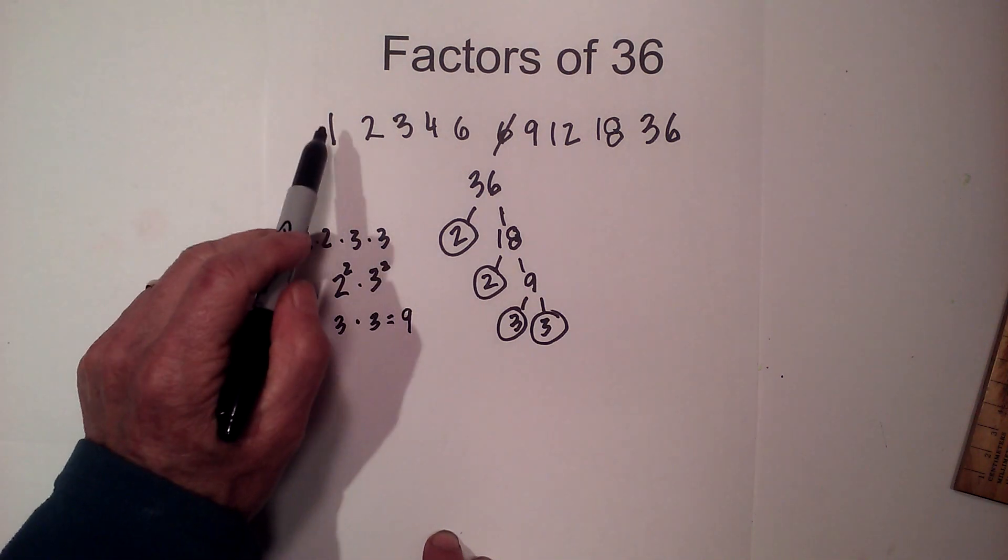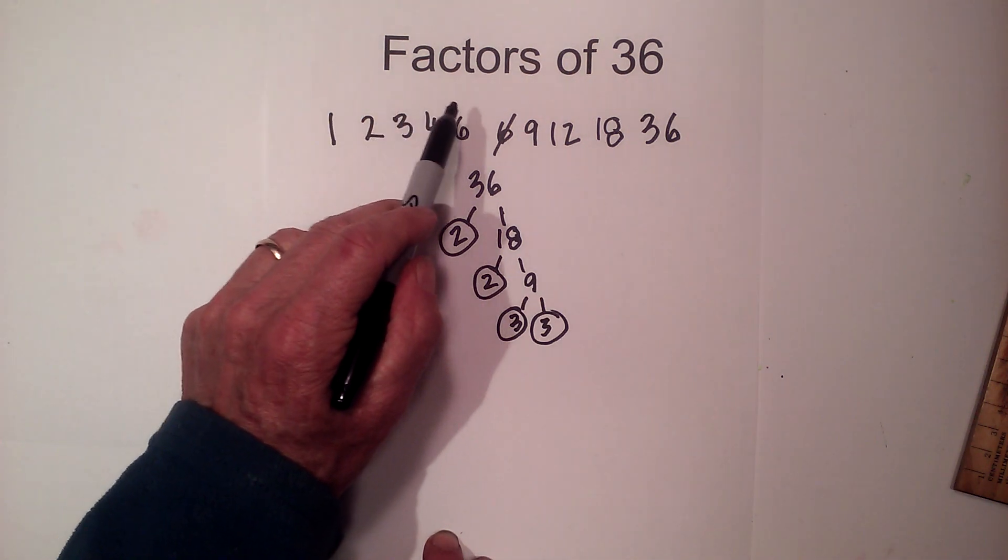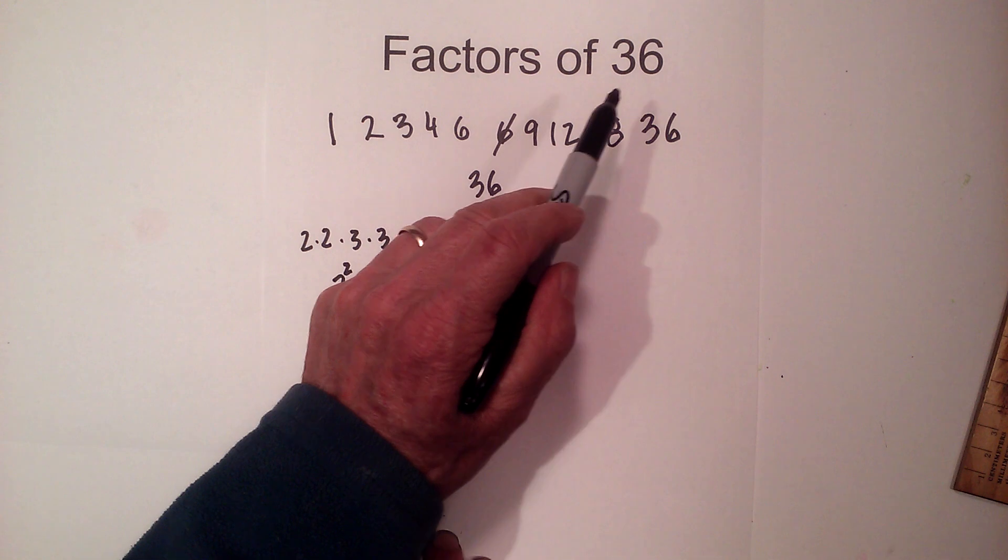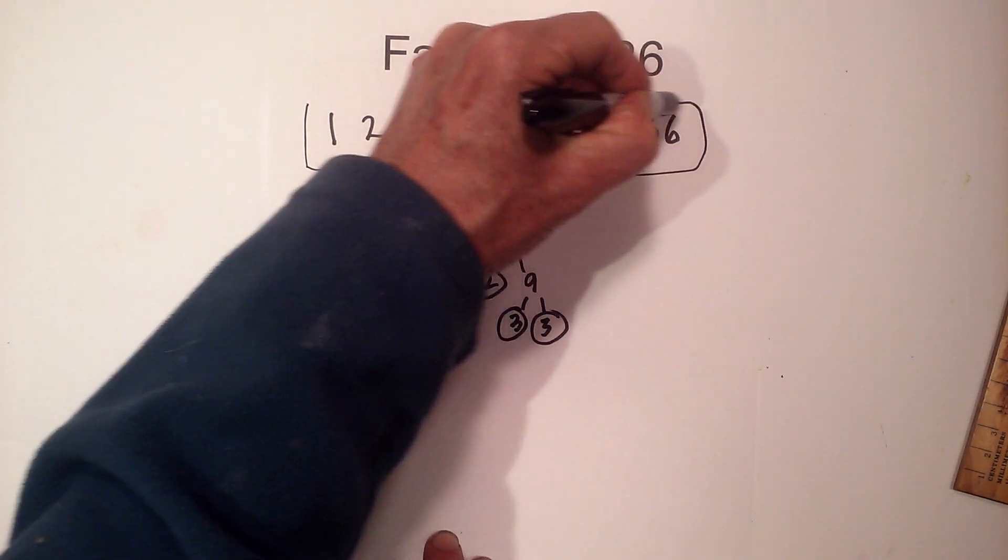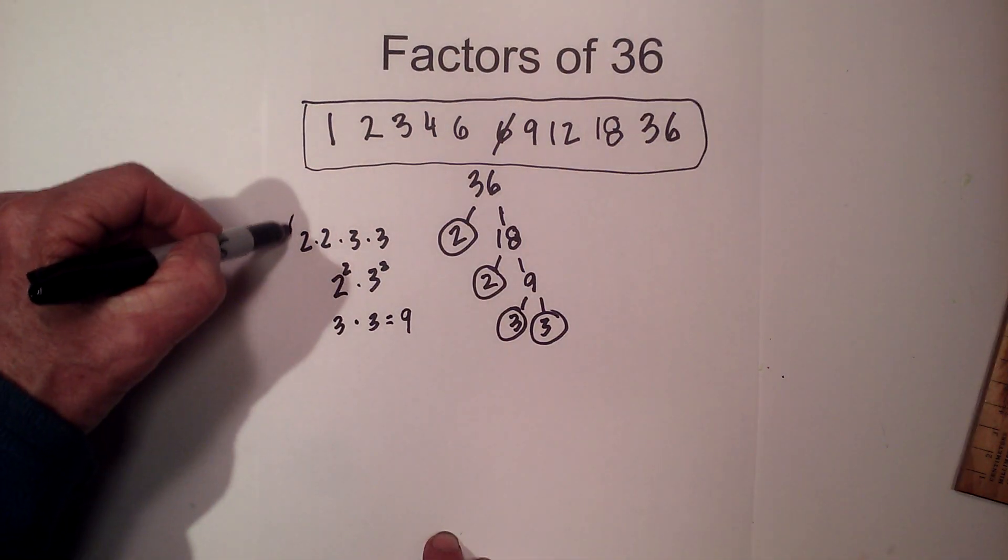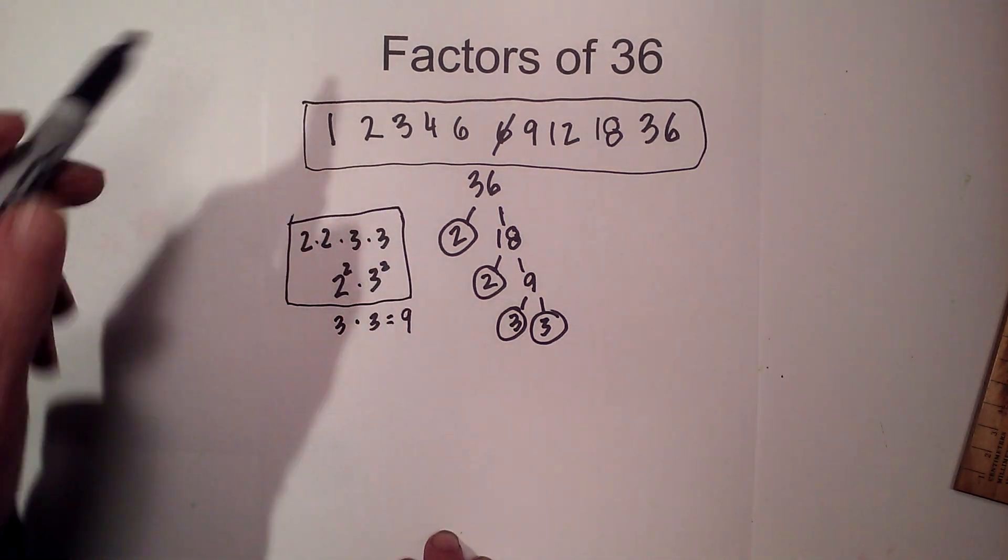3 times 3 is 9. So let's count 1, 2, 3, 4, 5, 6, 7, 8, 9. So here are the factors of 36 and here are the prime factors of 36.